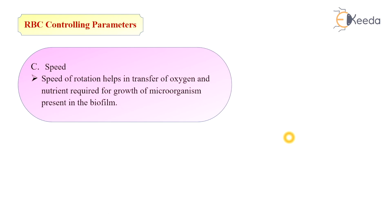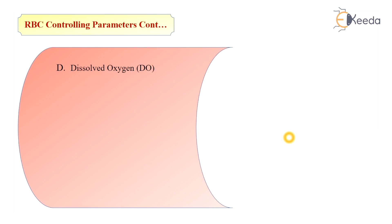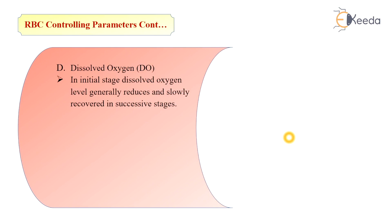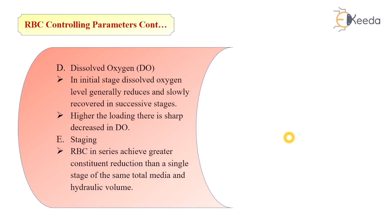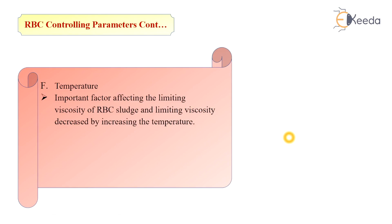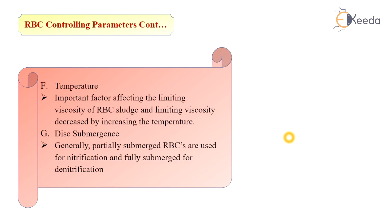The next important parameter is speed. Speed of rotation helps in the transfer of oxygen and nutrients required for the growth of microorganisms present in biofilms. Dissolved oxygen is another parameter — in the initial stage, dissolved oxygen generally reduces and slowly recovers in successive stages; higher loading causes a sharp decrease in dissolved oxygen. Staging: RBCs in series achieve greater constituent reduction than a single stage of the same total media and hydraulic volume. Temperature is also important, as it affects the limiting viscosity of RBC sludge — viscosity decreases with increasing temperature. Disc submergence: partially submerged RBCs are used for nitrification and fully submerged for denitrification.